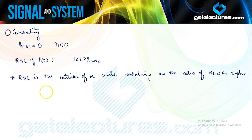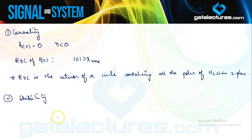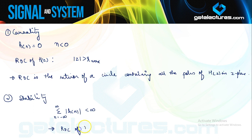If the system is anti-causal — meaning H(N) is 0 for N greater than 0, so H(N) is a left-sided signal — then the ROC of H(Z) is of the form |Z| less than R_minimum, or the interior of a circle containing no poles of H(Z). We do not consider anti-causal systems here. Now, to judge stability of a system: a discrete time LTI system is BIBO stable if the summation from n = minus infinity to infinity of |H(N)| is absolutely summable, meaning it should have a finite value. The corresponding requirement on H(Z) is that the ROC of H(Z) must contain the unit circle, i.e., |Z| = 1.